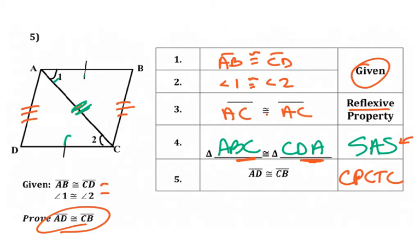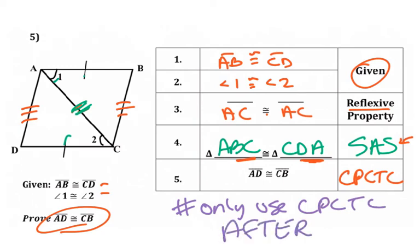So just in summary, using CPCTC, the number one thing to remember is you only use it after a congruent test has been used. So if you haven't used side-angle-side or side-side-side or angle-side-angle, if you haven't used one of those tests, you cannot use CPCTC. If you haven't already made a statement that this triangle is congruent to this triangle, you cannot use CPCTC.